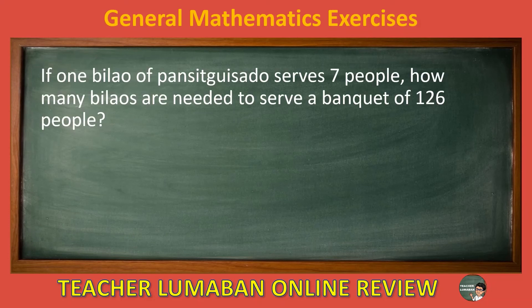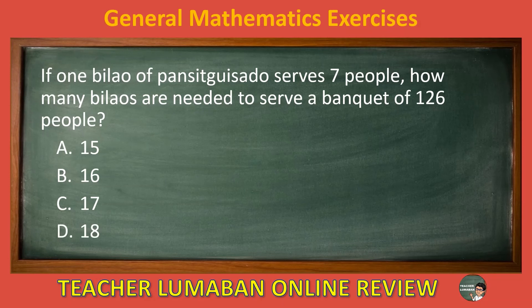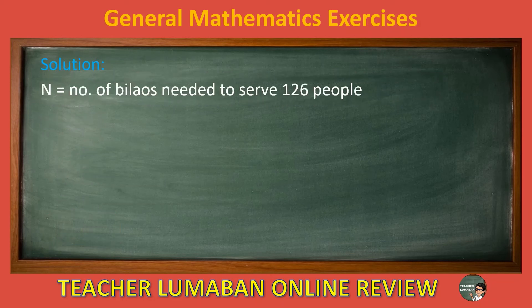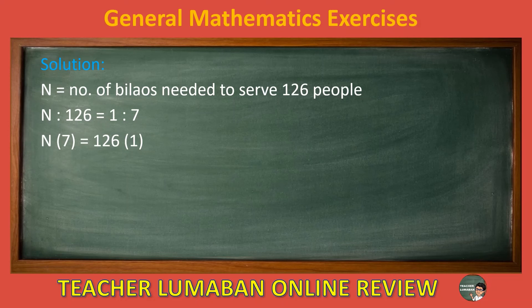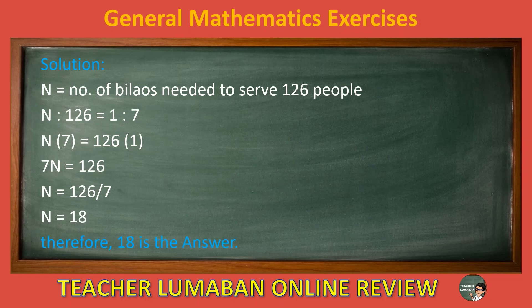If one bylaw serves 7 people, how many bylaws are needed to serve a banquet of 126 people? Letter A: 15. Letter B: 16. Letter C: 17. Letter D: 18. Choose the suitable answer in 5 seconds. 5, 4, 3, 2, 1. The correct answer is Letter D: 18. Solution: n equals number of bylaws needed to serve 126 people. n over 126 equals 1 over 7. 7n equals 126. n equals 126 over 7. n equals 18. Therefore, 18 is the answer.